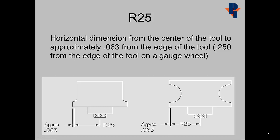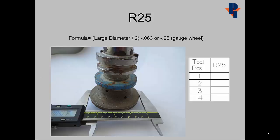R25 is a horizontal dimension from the center of the tool to approximately 0.063 from the edge of the tool, or 0.25 from the edge of the tool if the tool is a gauge wheel. Use a caliper to measure the largest diameter on the tool, divide that value by 2, and subtract 0.063, or 0.25 if it's a gauge wheel. Record the number, the same value, for each of the four metal tools.